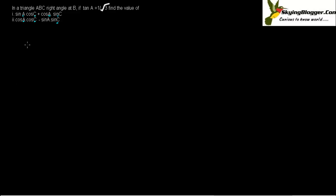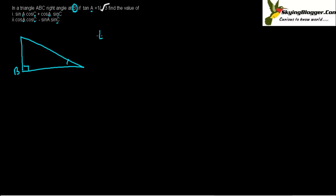Let's first make a right-angle triangle. The question gives us tan A, and the right angle is at B, so I have to make a right angle at B. tan A equals perpendicular upon base, which equals 1 upon root 3.